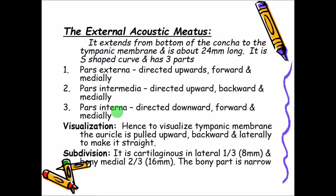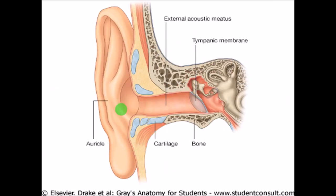To visualize the external acoustic meatus and tympanic membrane, you have to pull the ear upwards, backwards, and laterally because of the S-shaped curve. The lateral one-third is cartilaginous — the pars externa — and is 8 millimeters. The medial two-thirds are bony: the pars intermedia and pars interna. The bony part is the narrowest compared to the cartilaginous part.